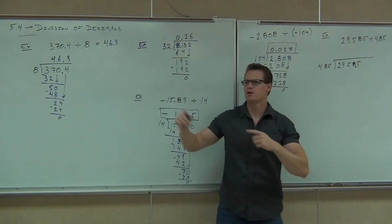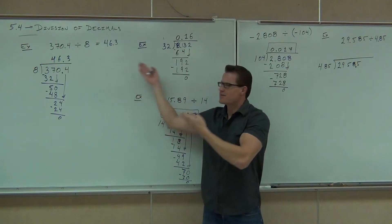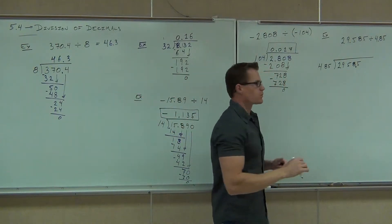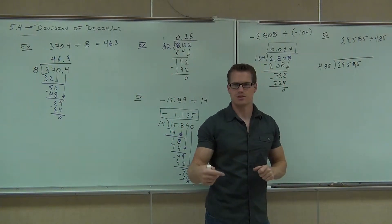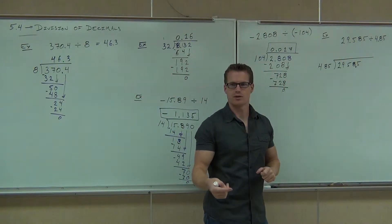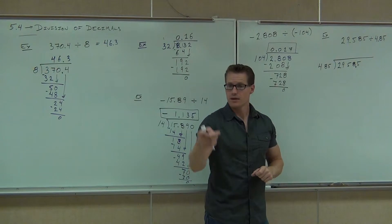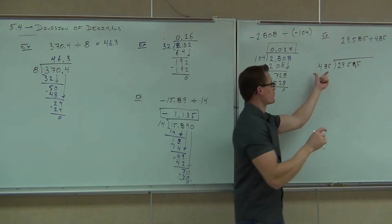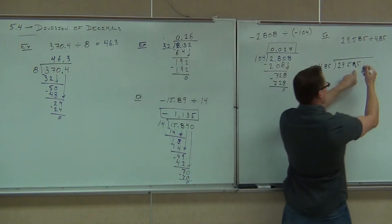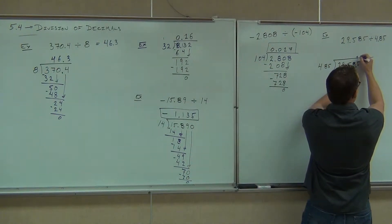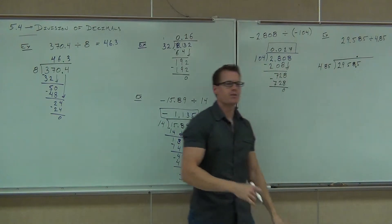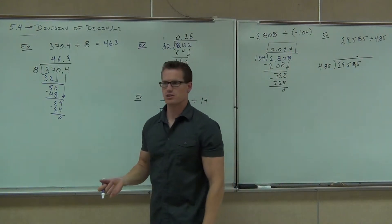Well, now we've got something we can work with. Now we have the same looking type of problem. What are we going to do after this, at this point? Put the decimal on top. Now we can, because we have a whole number over here. Now we can put that decimal where it's supposed to go, and then we would do our division as normal.